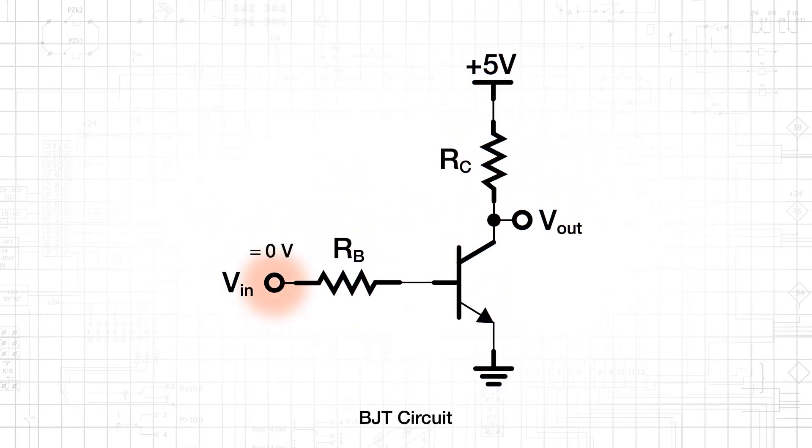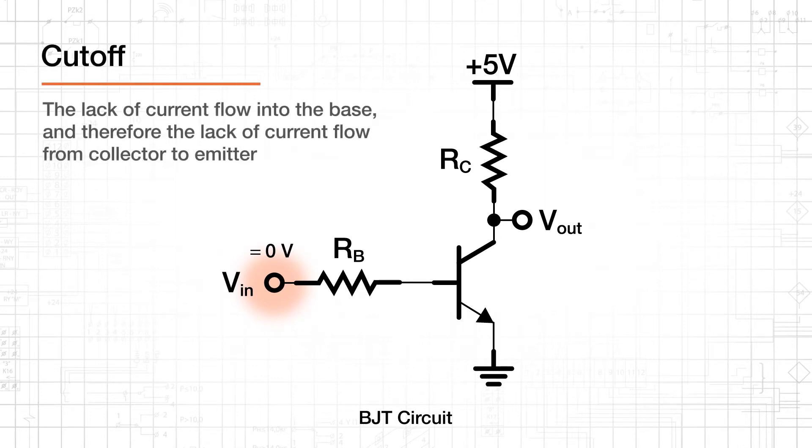If Vin is connected to ground, the base to emitter junction, or BE junction, is not forward biased. No current flows into the base, and consequently no current flows from collector to emitter. This is called cutoff, and the transistor will remain in this mode until the base voltage forward biases the BE junction.